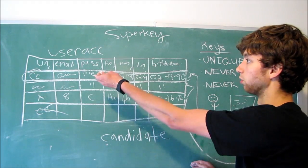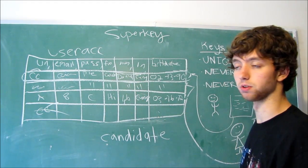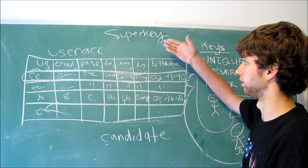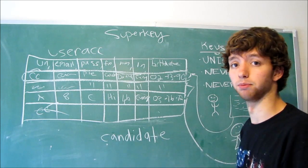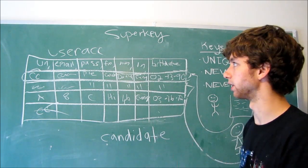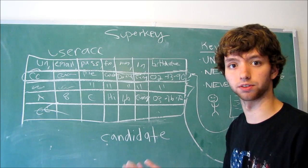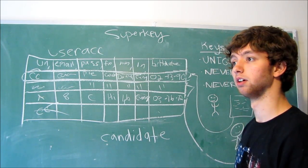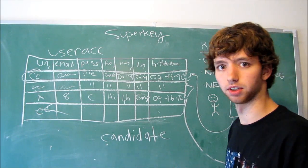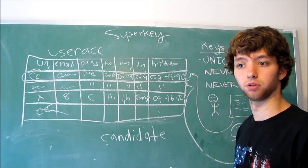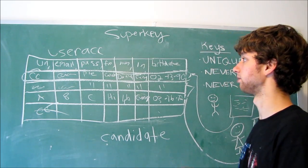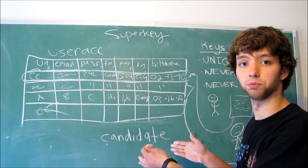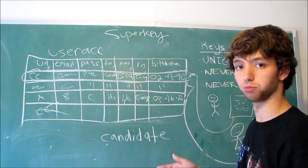A candidate key is the least number of columns needed to force every row to be unique. In this example, the username is enough to make it unique. So we can take the candidate key and have it to be just the username. The candidate is least, and super key is any.